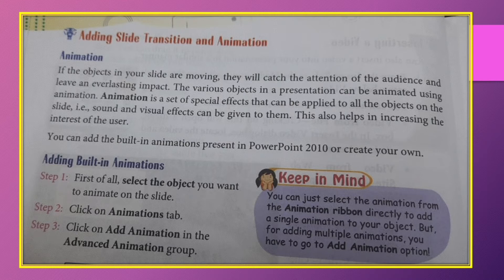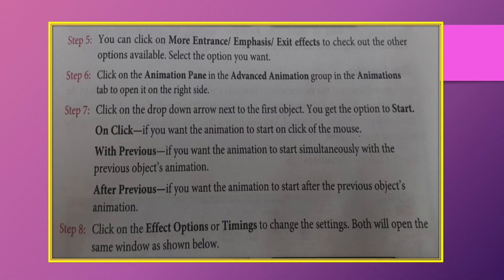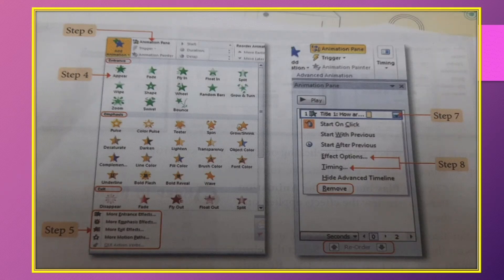Animation — if the objects in your slide are moving, they will catch the attention of the audience and leave an everlasting impact. Animation is a set of special effects that can be applied to all the objects on the slide — that is, sound and visual effects can be given to them. To add animation, first select the text or object, click on the Animation tab, then click on Advanced Animation. Different animation styles will appear. You can click on more Entrance Effects, Emphasis Effects, and Exit Effects.